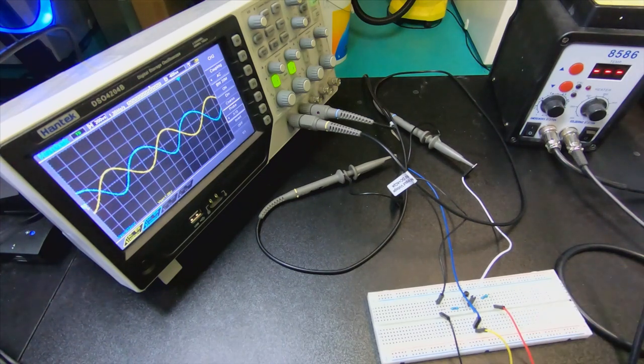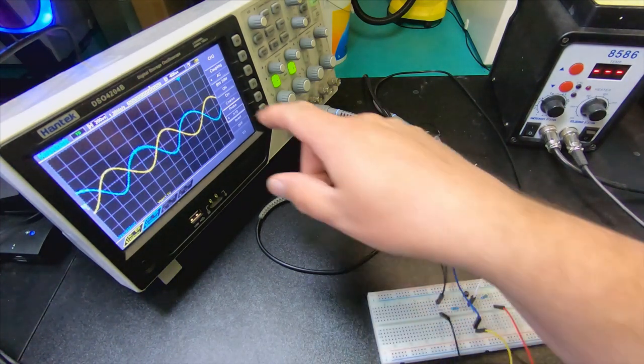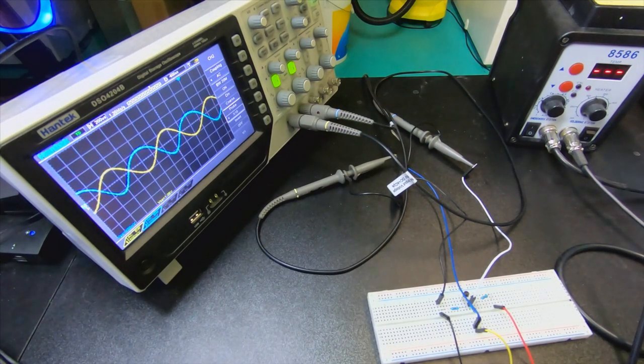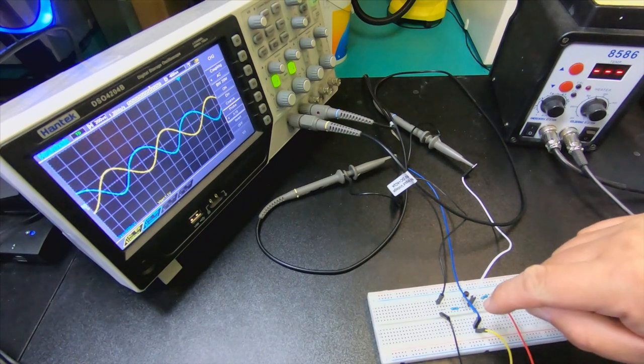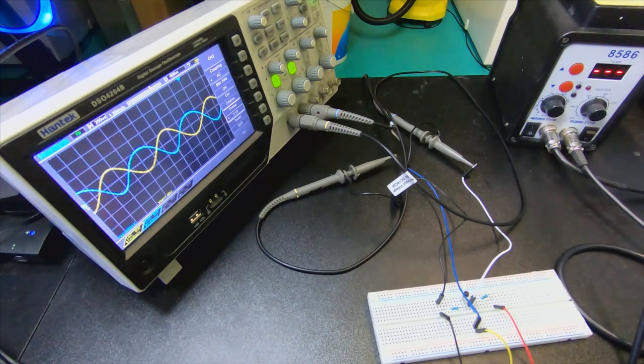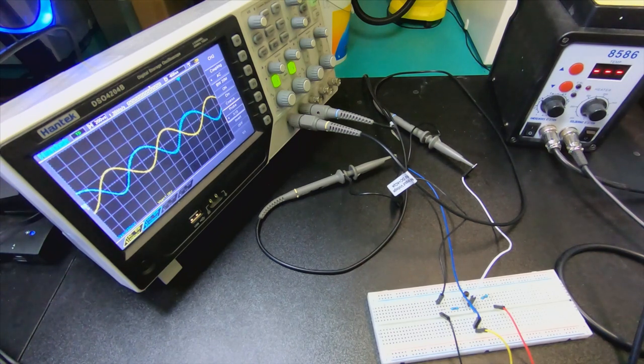So it's again our common emitter amplifier, put a little bit more realistic signal, so it's a kilohertz and two and a half volt offset with one volt going in. And then of course it has an extra impedance, so it'll be smaller on the base. Just to illustrate the issue of temperature stabilization.